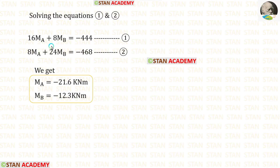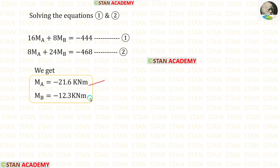We have made two equations. Now let us use the calculator and solve these two equations. If you do not know how to solve two equations in the calculator, see the description below — there is a link. You can click the link and watch the video. After solving, for MA I am getting −21.6 kNm and for MB I am getting −12.3 kNm.